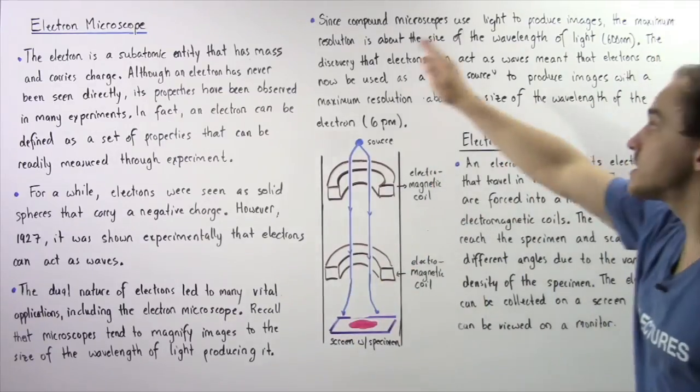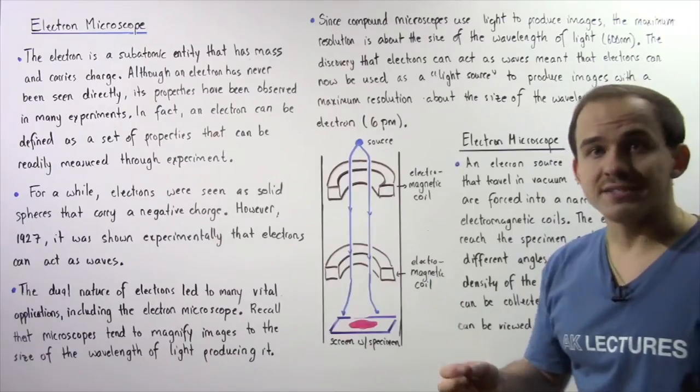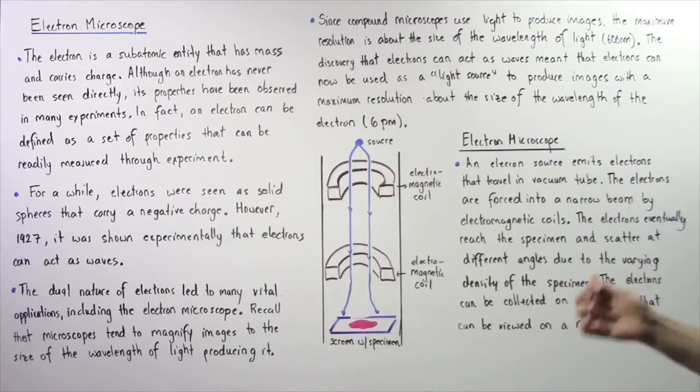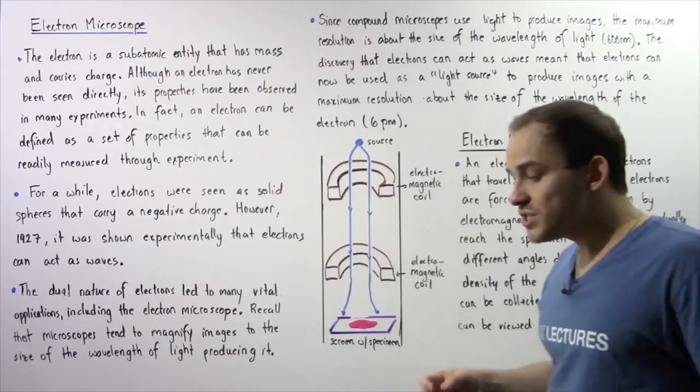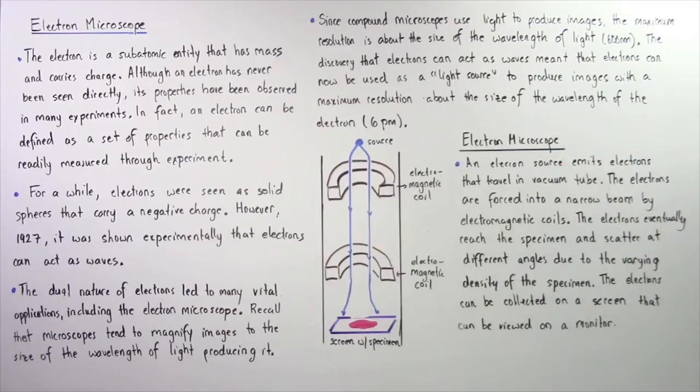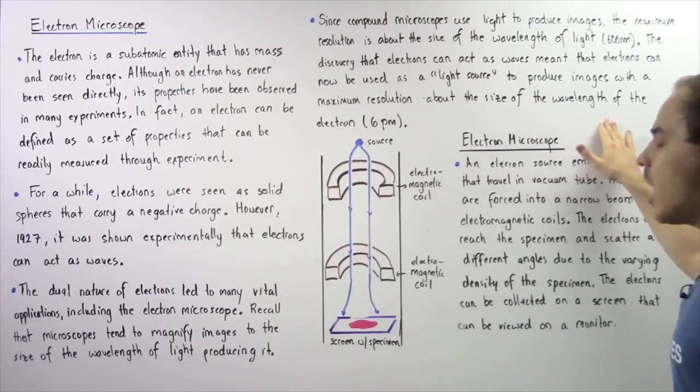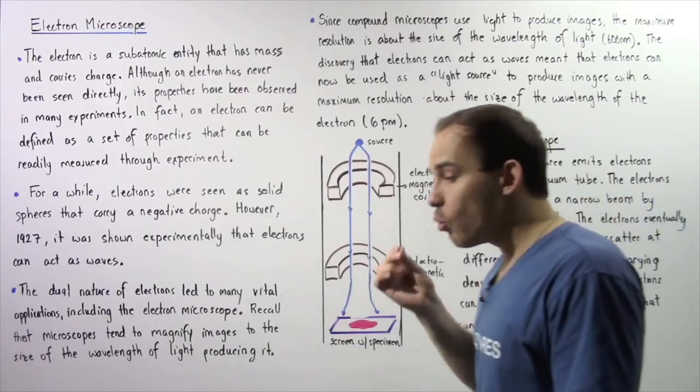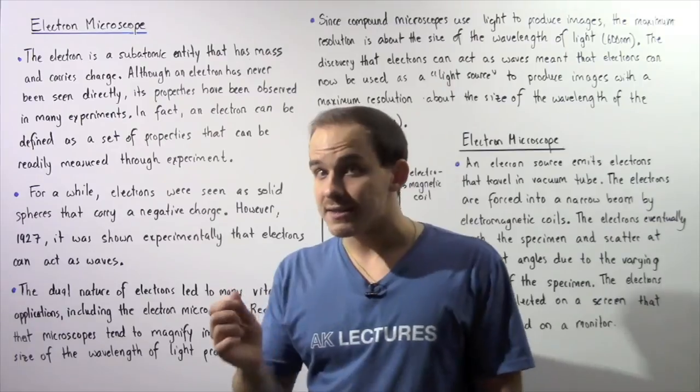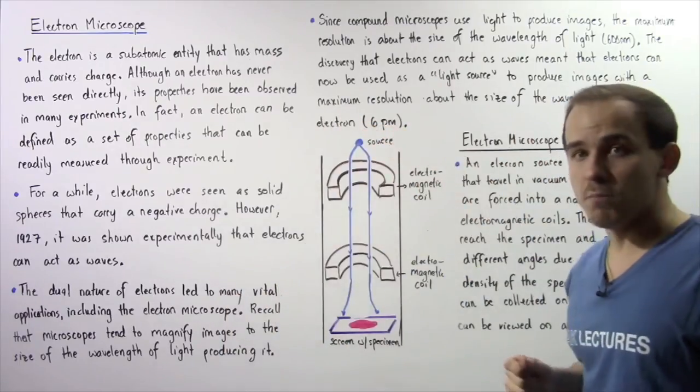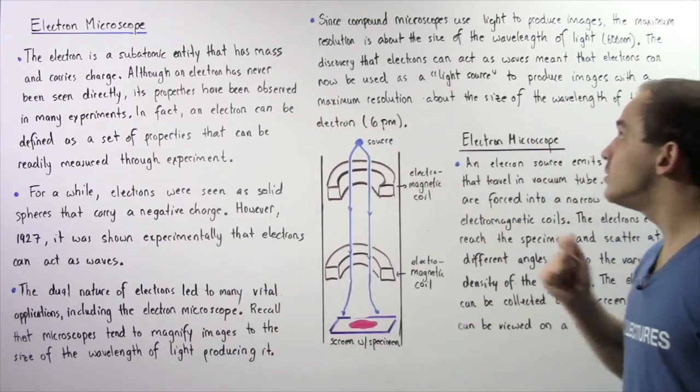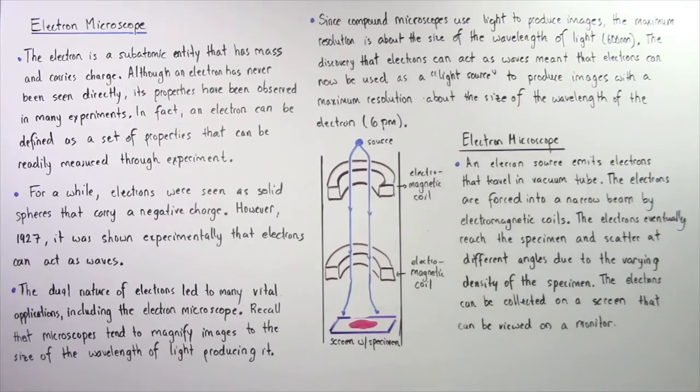However, the discovery that electrons can act as waves or particles meant that now electrons can be used as light sources to produce images with a maximum resolution of about the size of the wavelength of an electron. And the wavelength of an electron is about 6 picometers, so it's much much smaller than the wavelength of visible light.